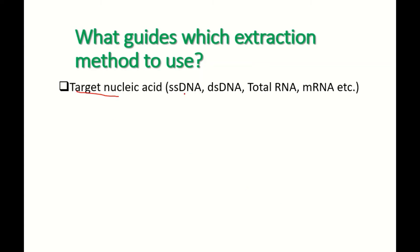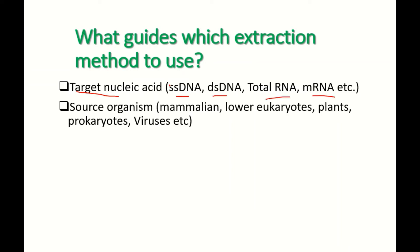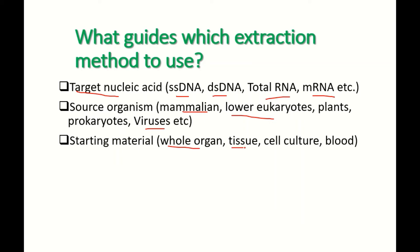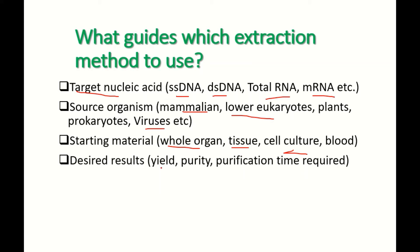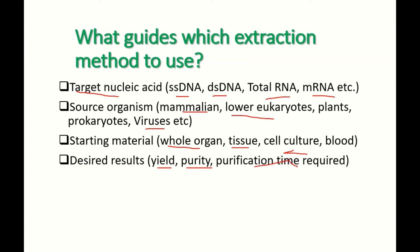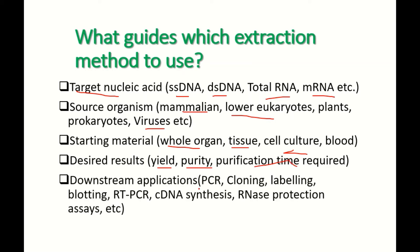What guides the extraction method to use? Consider your target nucleic acid — single-stranded DNA, double-stranded DNA, total RNA, or mRNA. Consider the organism source — is it a mammal, a lower eukaryote, a plant, or a virus? Consider your starting material — whole organ, tissue, cell culture, or blood. Also consider your desired results: yield, purity, or purification time, and what the downstream application is — PCR, cloning, labeling, blotting, cDNA synthesis, or nuclease protection assays.